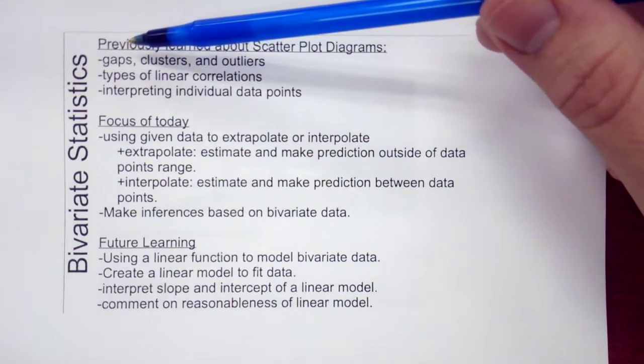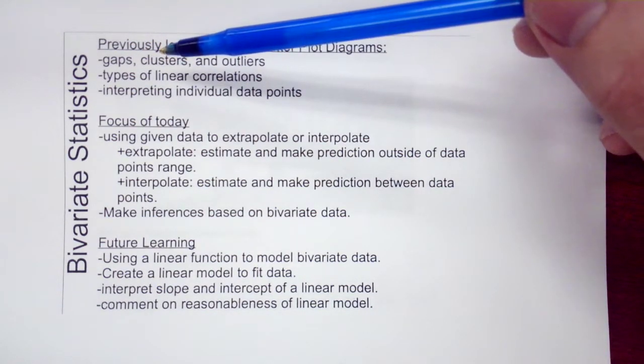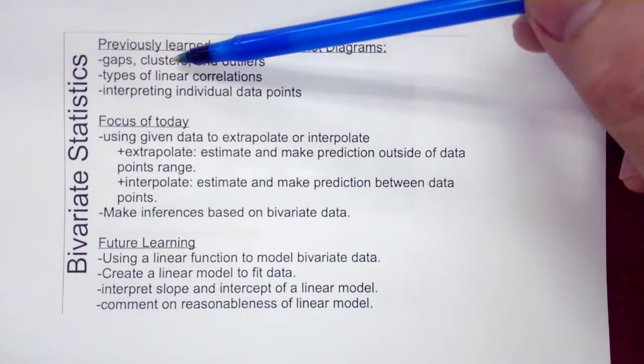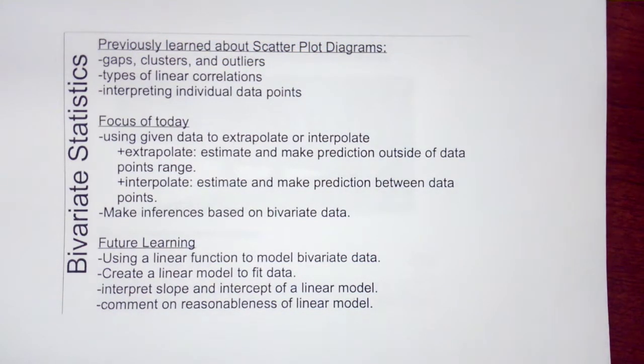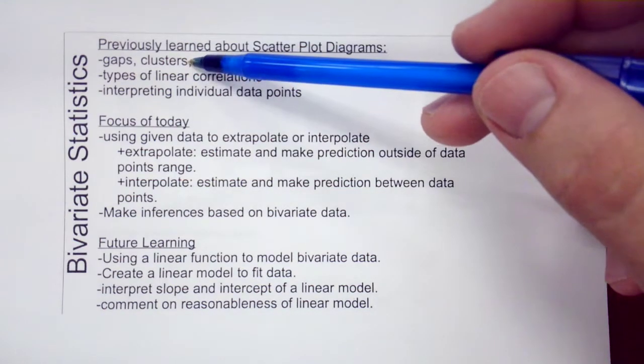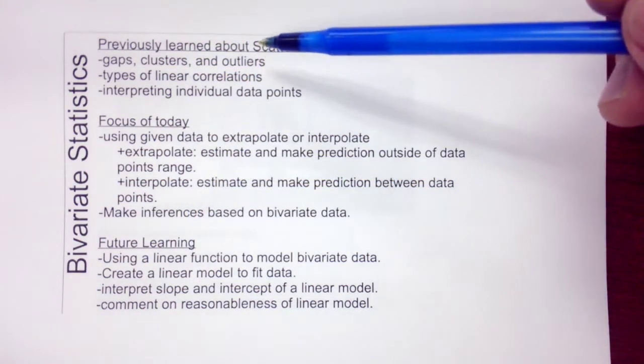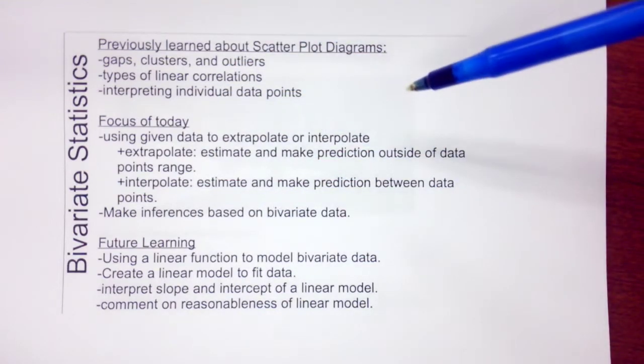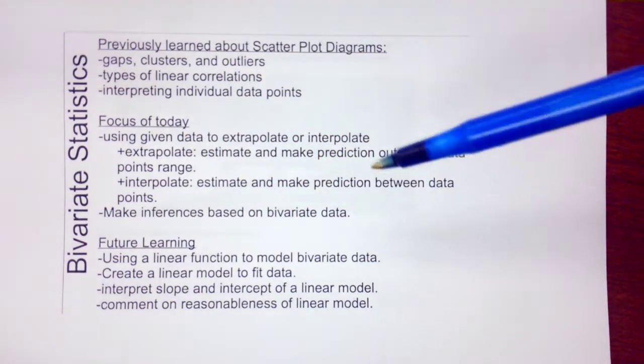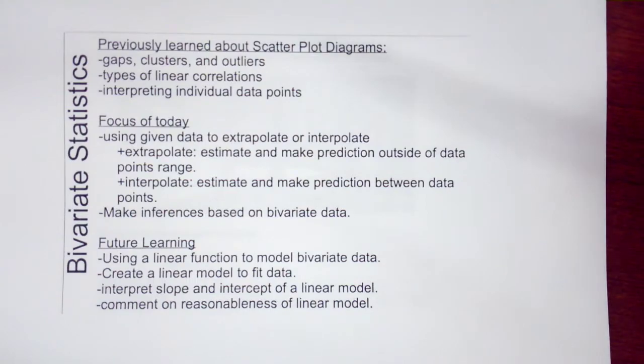Gaps were sections in data where we were missing information where we expected things to be. Clusters were large groups of information that was all in one area. And then outliers were areas on the graph that laid outside of where we generally would predict them to be.